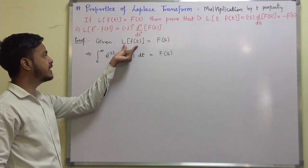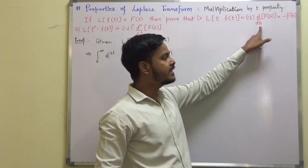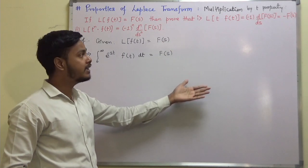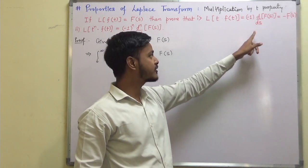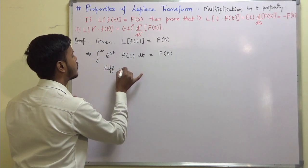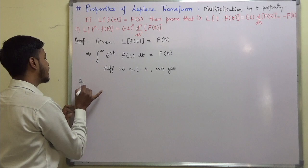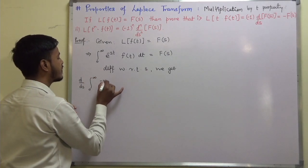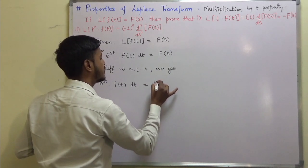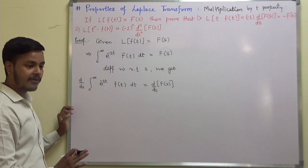Now, looking at the result, we need d/ds on the right-hand side, but we don't have it yet. So we differentiate both sides with respect to s. We get d/ds of the integral from 0 to infinity of e^(-st) · f(t) dt equals d/ds of F(s).